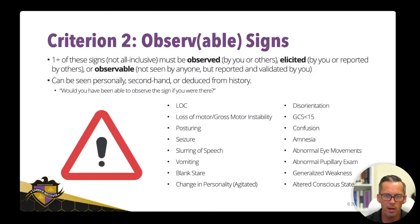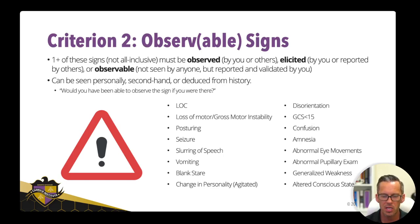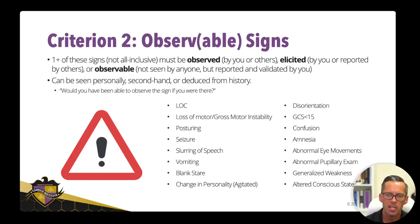Just to recap criterion two: you need one of these signs — observed, elicited, or observable. It can be seen by you personally, secondhand, or deduced from history. Would you have been able to observe the sign if you were there? If yes, it qualifies for criterion two. Other signs include amnesia, generalized weakness, abnormal pupillary exam, abnormal eye movements, slurring of speech, and posturing — like Tua Tagovaiola's hands going up in the air. That's posturing — abnormal motor tone. These are all observable signs.